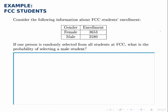Consider the following information about student enrollment at FCC. We have a table that breaks down the gender of students — how many male students there are and how many female students there are. We're told that we randomly select one person from all these students and we want to know: what is the probability that the one we selected is a male student?